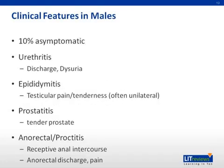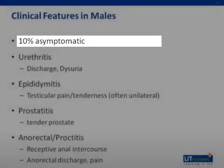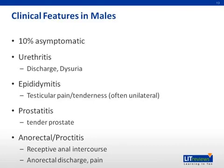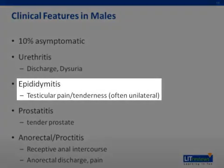Switching over to males — similar to females, there is an asymptomatic population, though in males it is estimated to be only about 10%. Among those who do have symptoms, urethritis is the most common manifestation, characterized by purulent discharge, itching, and potentially dysuria. Epididymitis can occur and manifest with testicular pain and tenderness, which may be unilateral or bilateral, but more often is unilateral.